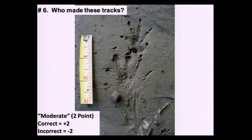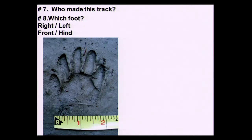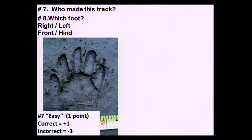You can see the tail drag right there too. Who made this track? That is a raccoon — considered an easy question. It's a very clear, almost hand-print of a person. One point if you got it correct, negative three if incorrect. And which foot was it? This was a hind foot — right hind foot. Here's a front foot in comparison, showing the difference in size, with the inner toe set back lower than the outer toe. That was a difficult question: plus three, negative one incorrect.